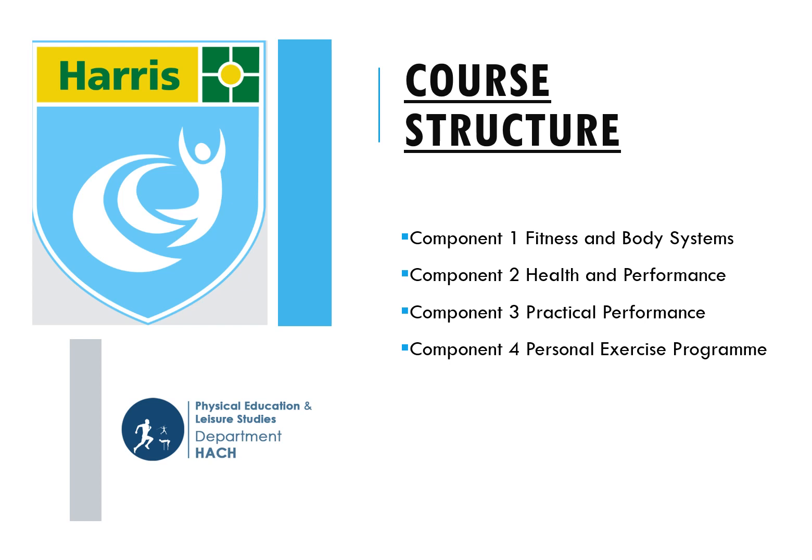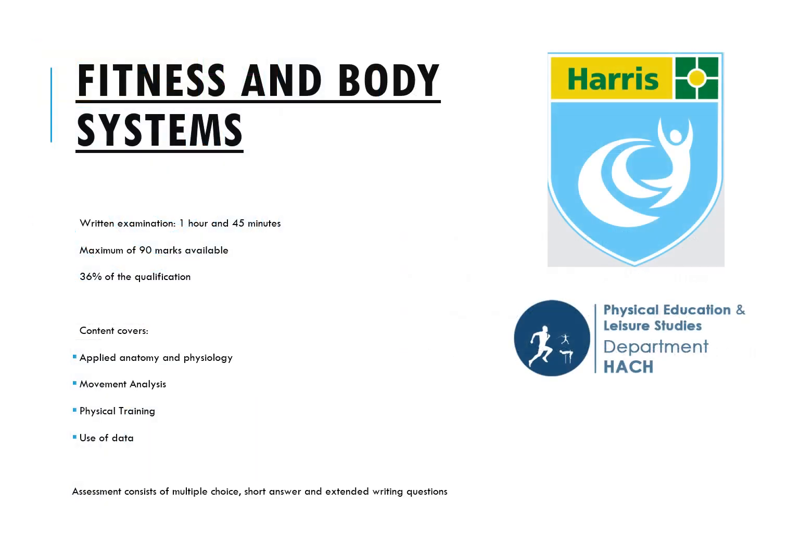Looking at the core structure, there are four components. Component one and component two are both externally examined. Component one covers fitness and body systems, and component two is health and performance. Component three is your practical performance, where you choose three sports — one team, one individual, and one free choice. Component four is a piece of controlled assessment called a personal exercise plan.